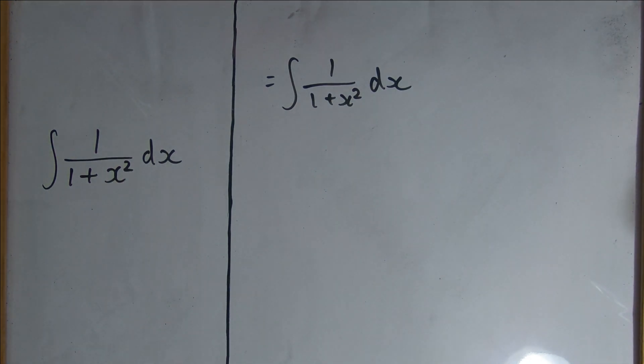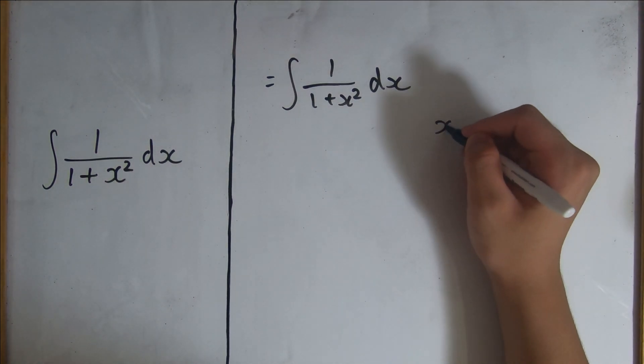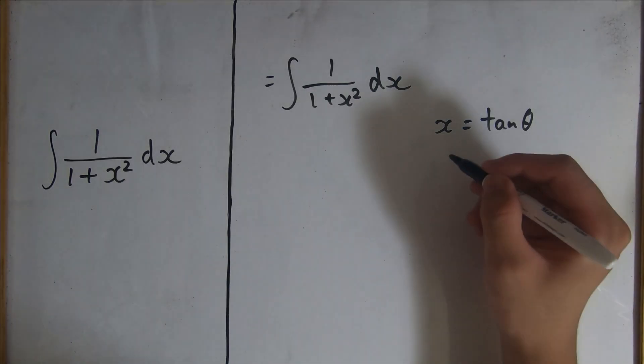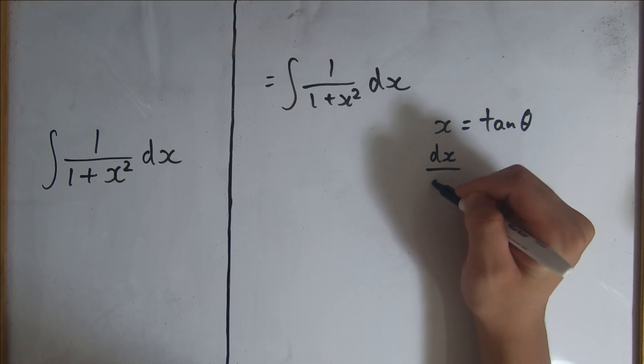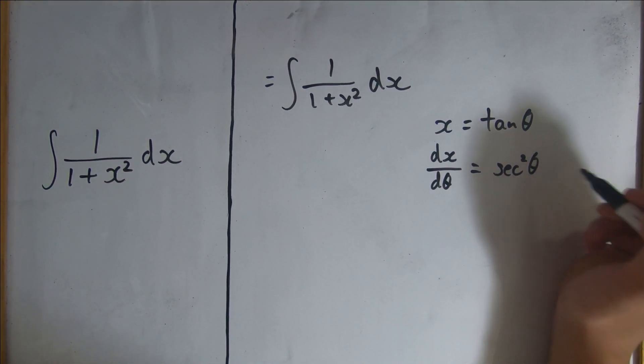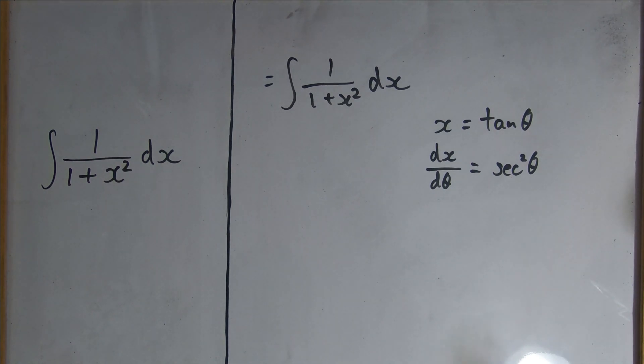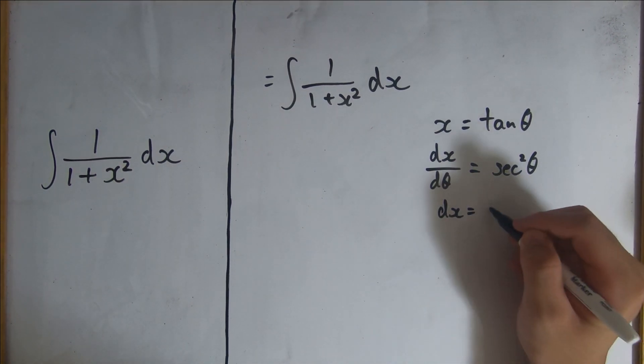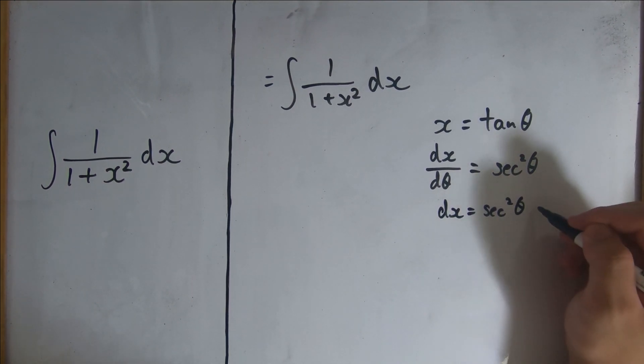For a substitution, we're going to use x equals tangent theta. Implicitly differentiating both sides, we get dx over d theta equals sec squared theta. Moving the d theta to the right side, we get dx equals sec squared theta d theta.